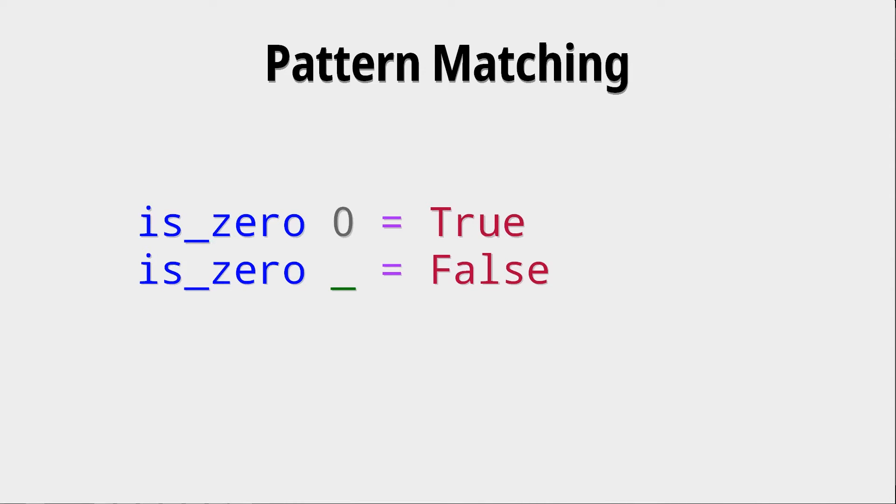Another way of doing a very similar thing is pattern matching. Now for integers pattern matching is not that interesting like we can see here. What we're saying is that is_zero of 0 is true and otherwise this other case matches. So what does that mean? Well we will look at pattern matching a bit more extensively in a later video, but here what you have to understand is that this underscore means we have a wildcard.